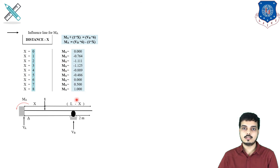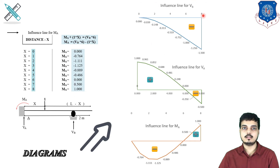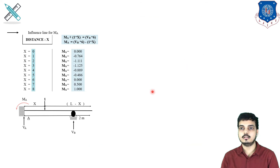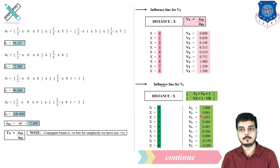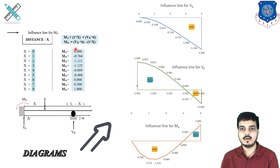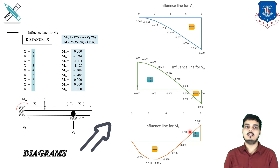After finding all MA values we draw the influence line diagrams for VA, VB, and MA. For VB the ordinates were explained as negative, so the diagram is drawn below. For VA, positive values are drawn upward and negative values downward. For MA, at point 0 it is 0; at point 1 it is −0.76; at point 2 it is approximately −1.31; and so on, connecting all points in a curvilinear form.